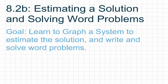For 8.2b, we're going to be estimating a solution and solving word problems, all related to systems of equations solved by substitution. Our goal with this lesson is to learn to graph a system in order to estimate the solution, and then also to write and solve word problems. Let's take a look at a couple examples where we have to graph a system in order to estimate where the solution would be.